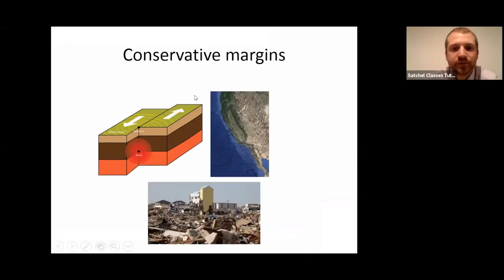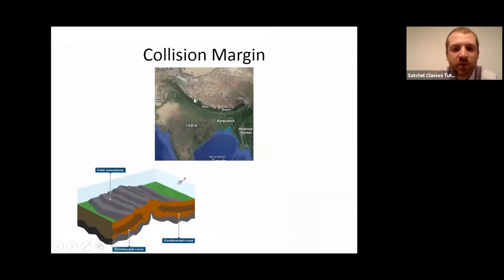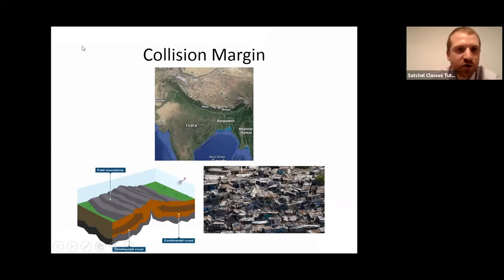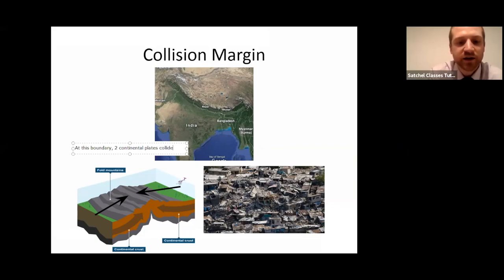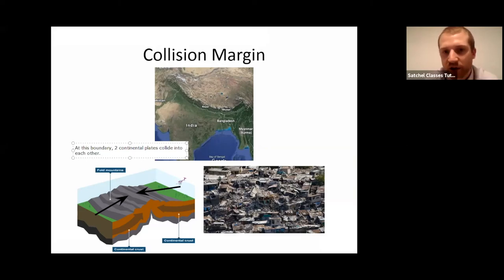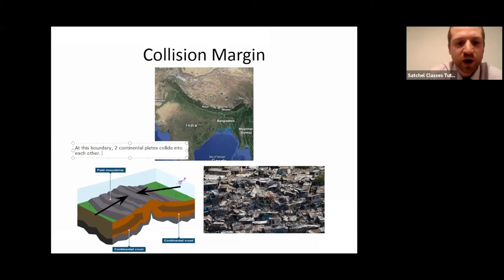This one is what we call a collision margin. We can see the hazard it contributes to. At a collision margin, two plates are moving into each other — they're colliding — but they tend to be two continents colliding together. At this boundary, two continental plates collide into each other. They're both the same density, so unlike oceanic meeting continental plate, neither really gives way.